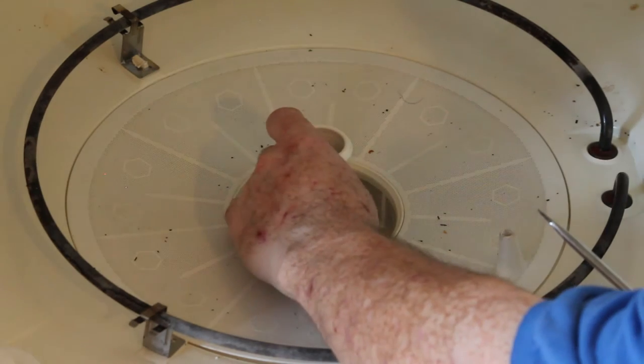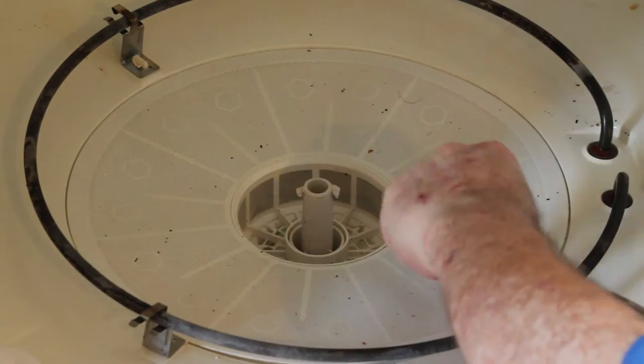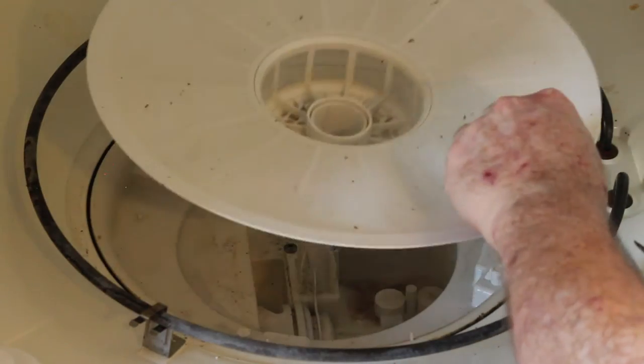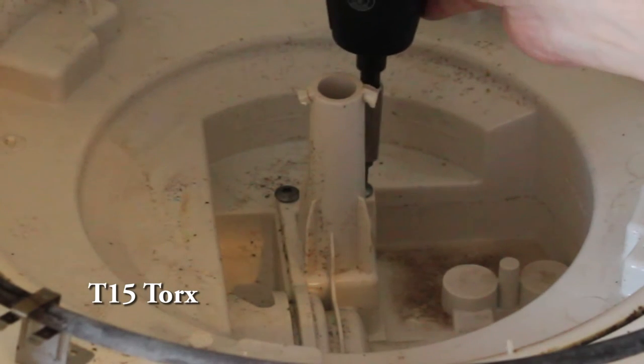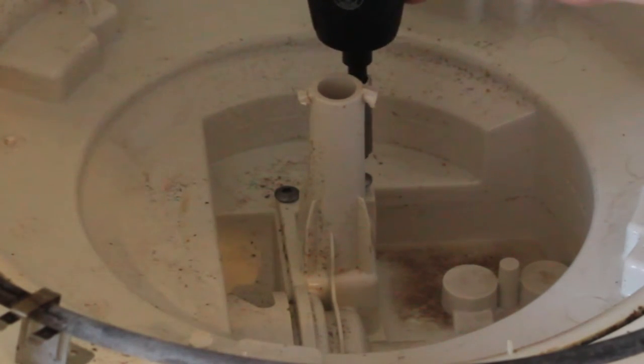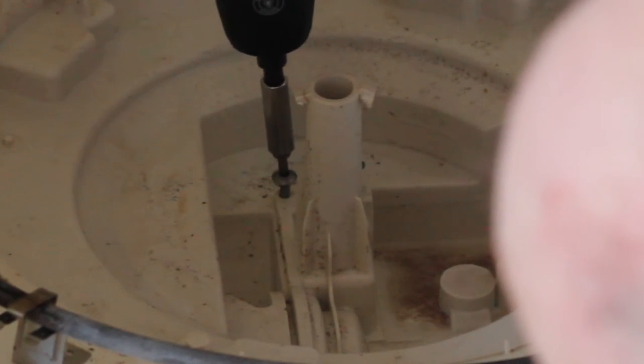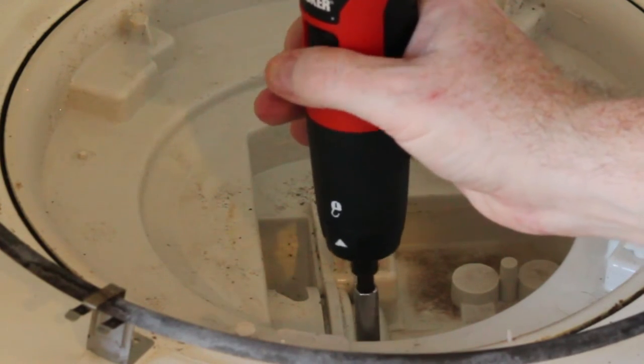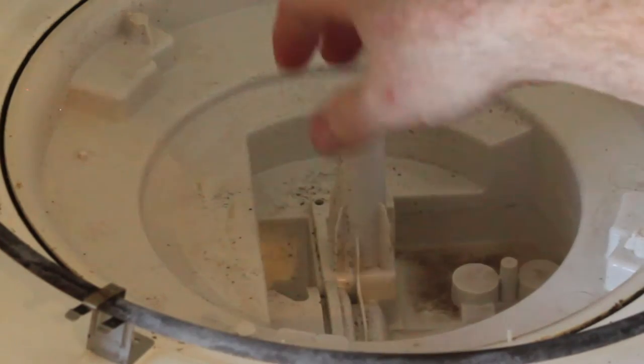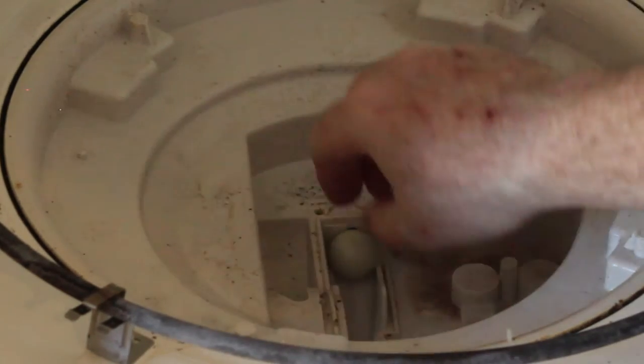Next remove the lower spray arm support. You just turn it 90 degrees and lift it off. Pull out the main filter by just lifting it out. Next unscrew the pump cover. Remove the check ball valve and set it aside.